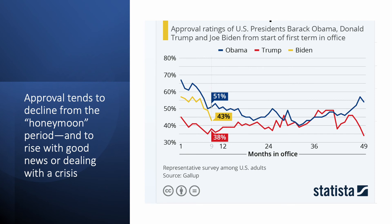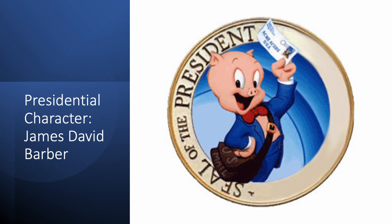Here we have three presidents — Barack Obama, Donald Trump, and Joe Biden — showing that pattern. In Obama's case, the blue line, he starts high, goes down, then gradually comes up a bit. Biden's starts high, then deteriorates. This often happens because presidents start dealing with conflictual issues — some people like what they're doing and others don't. When they first start, everyone's optimistic, but over time people become disaffected as divisive issues reduce approval. Crisis brings it up; divisive issues bring it down.